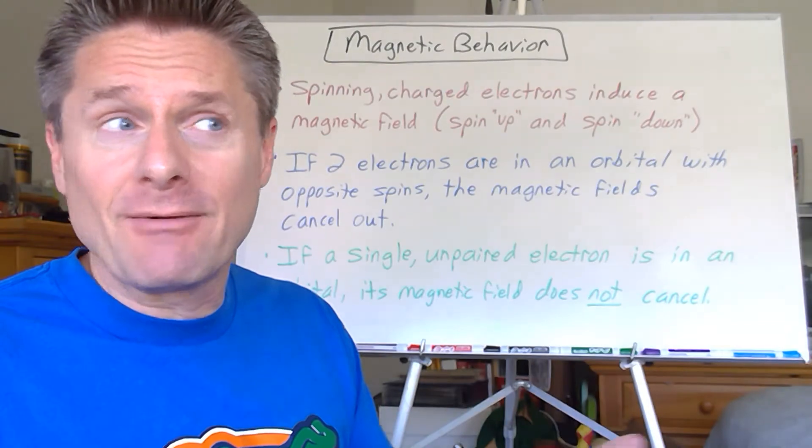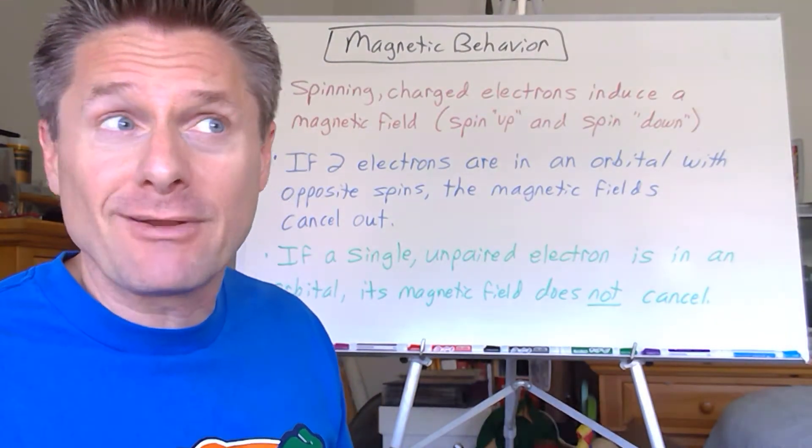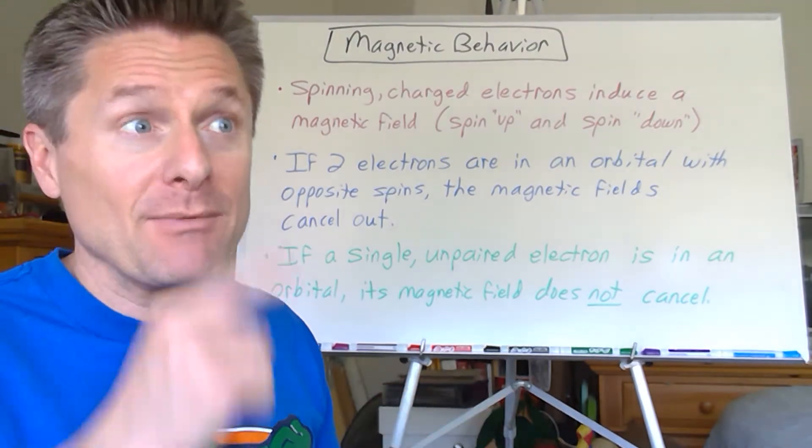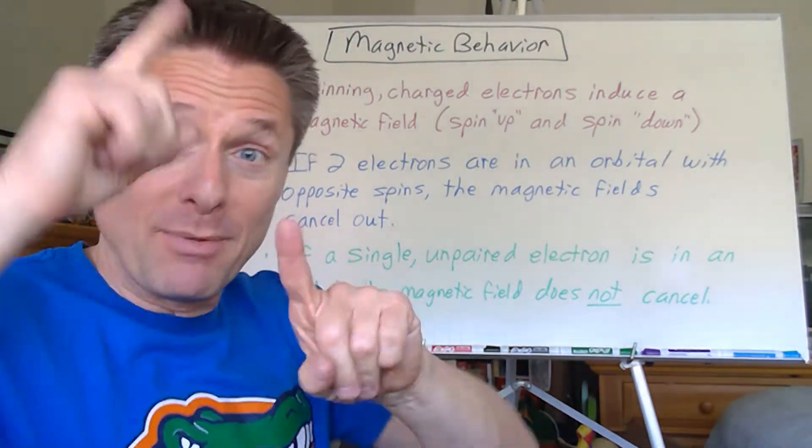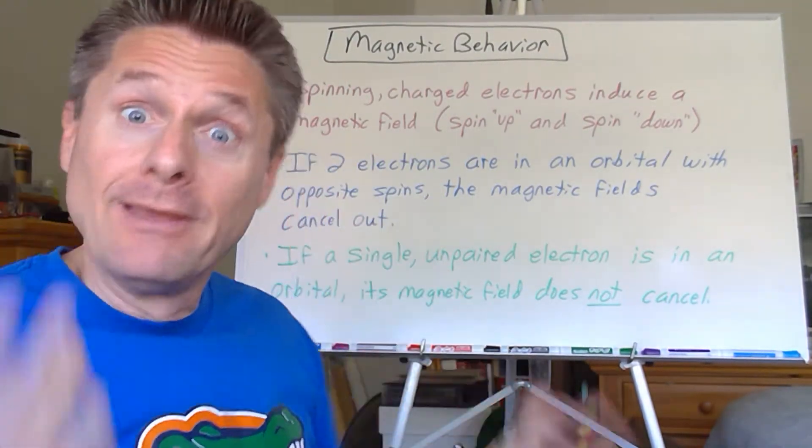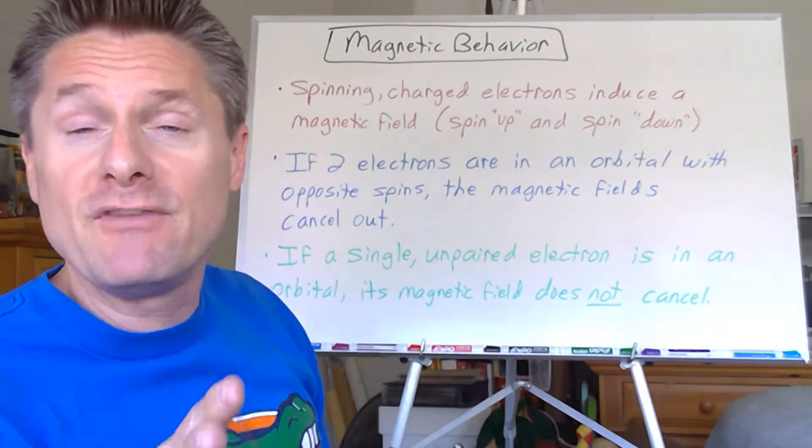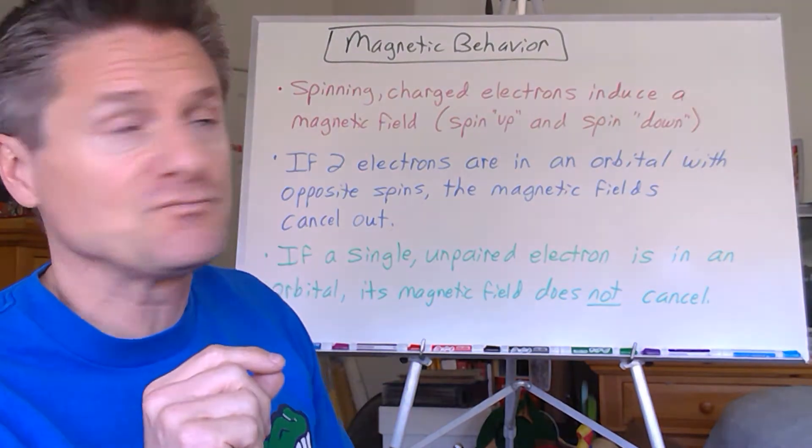If I give you an electron configuration, can you tell me if it has unpaired electrons? You need the orbital box diagram to see if you've got a single arrow pointing up or if you've got an arrow pointing up and down. It makes a big difference. Remember from before when we looked at electron spin.